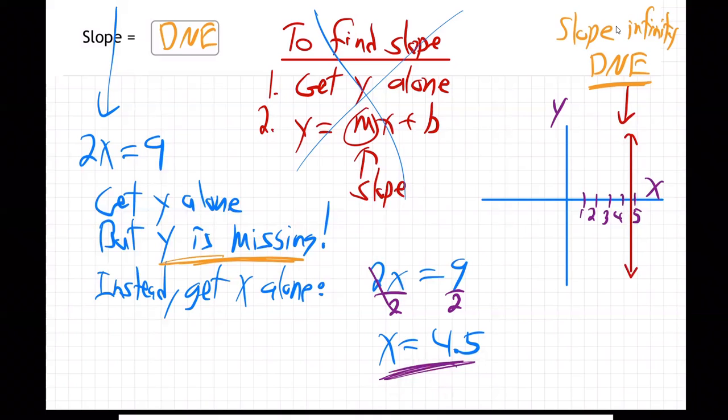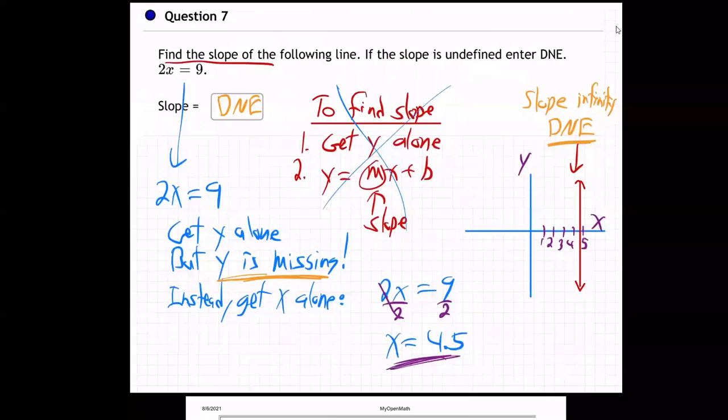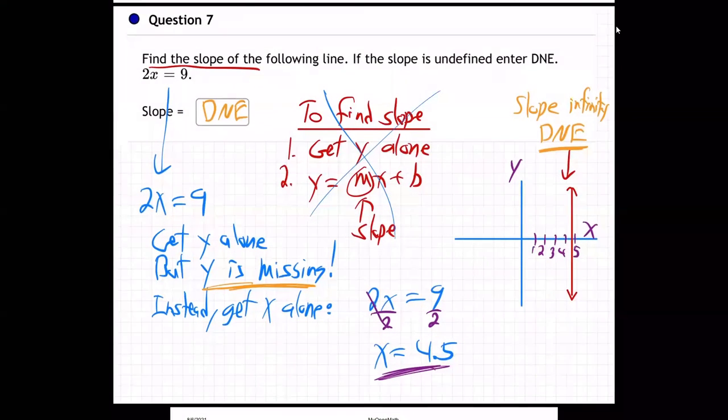Really, when you have only x, that means your line goes only through the x-axis, which means it's perfectly vertical like a cliff, which means its slope is infinity. And infinity is not a number, so we say DNE, does not exist. So when y is missing, the slope is DNE. There we go.